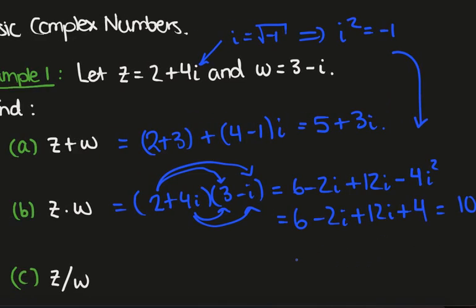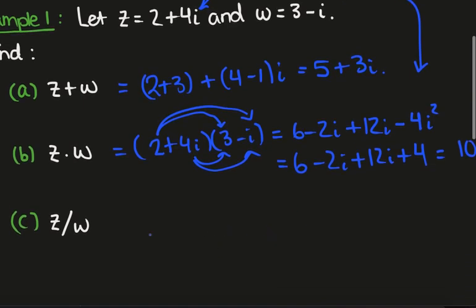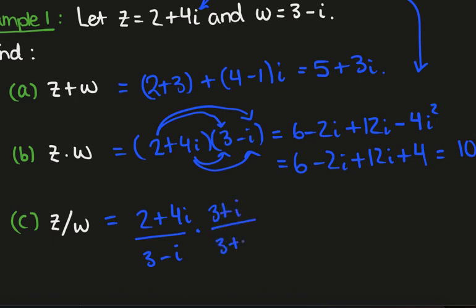Now let's look at z divided by w. We have 2 plus 4i divided by 3 minus i, and we want it in the form a plus bi. To do that, we make the denominator real by multiplying by the conjugate — that is, multiplying by 3 plus i over 3 plus i. Notice this is just multiplying by 1.